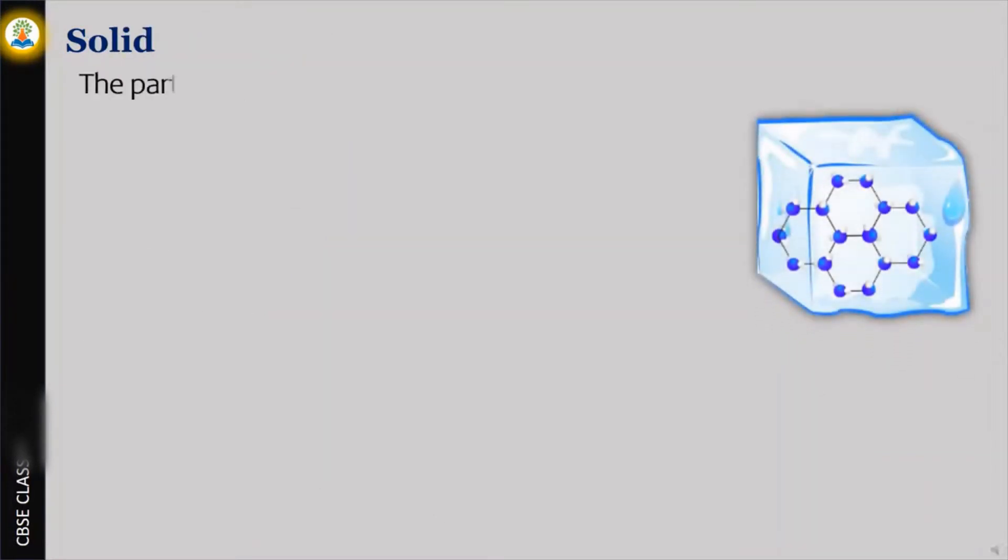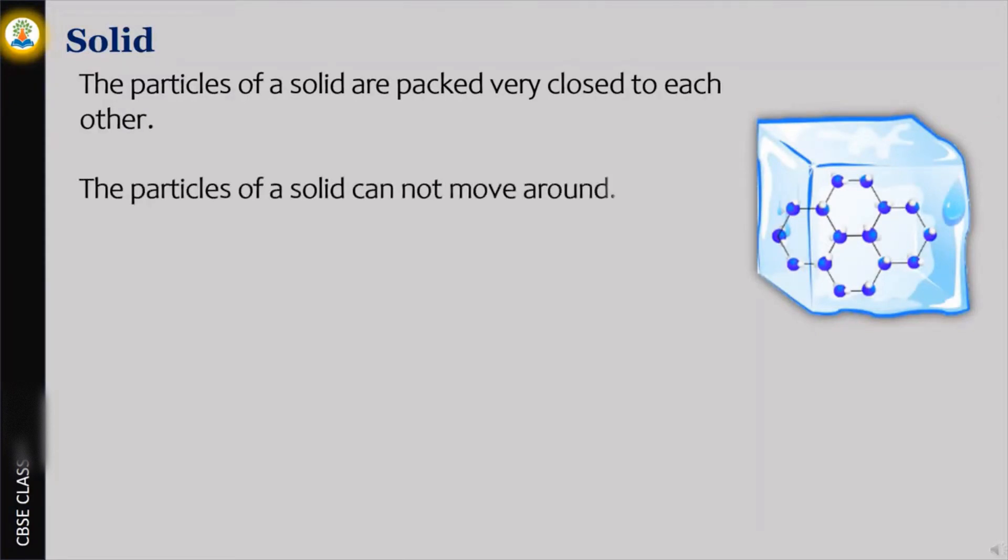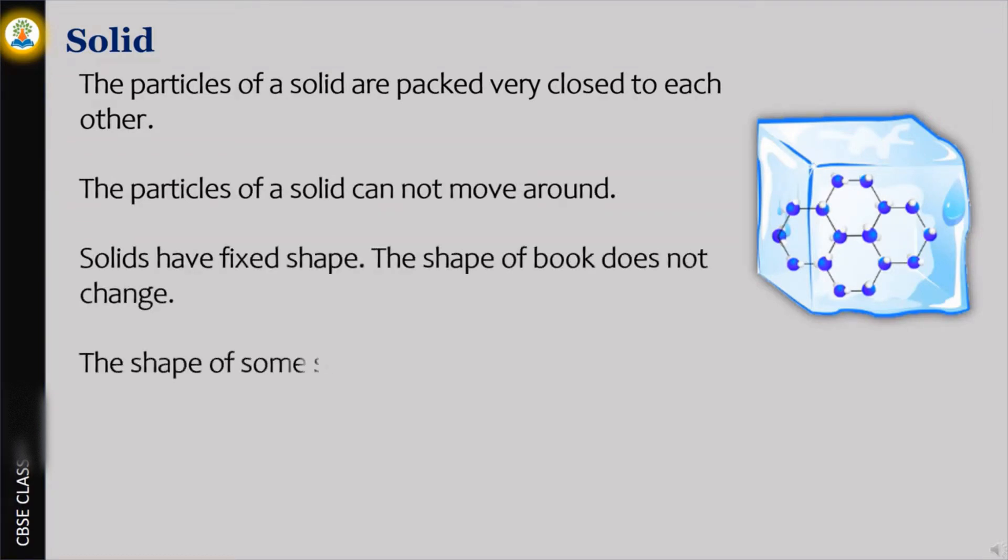The particles of a solid are packed very close to each other. The particles of a solid cannot move around. Solids have a fixed shape. The shape of a book does not change. The shape of some solids can be changed by pressing or stretching. Examples are wood, paper, metal rod and table.